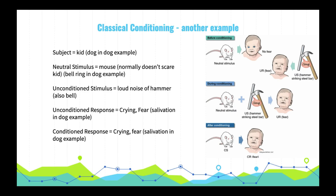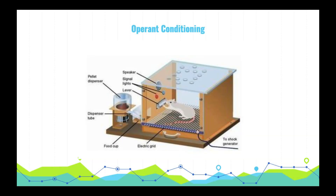There's another example here with a crying baby and a mouse. Next up we have operant conditioning, where animals learn to associate their own actions with responses. The important scientist here is B.F. Skinner, creator of the Skinner box, which we see in front of us.